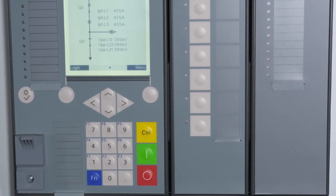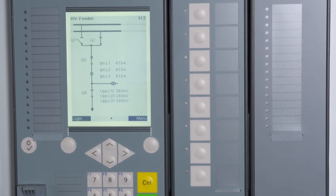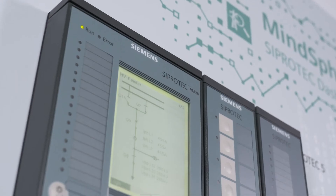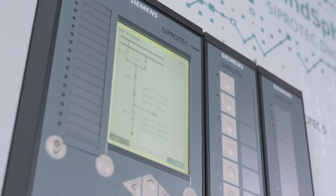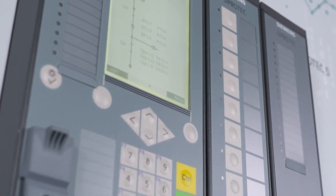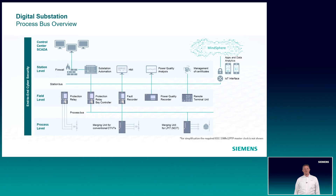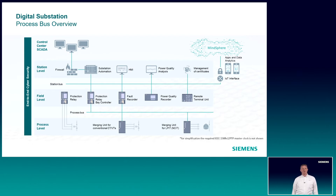What is ProcessBuzz? It's the digital interface between the process level and the field level. Traditionally, instrument transformers are connected from the process directly to the IEDs at field level, like protection devices. With ProcessBuzz, the idea is to digitize the analog and binary signals as close as possible to the process level, to reduce, for example, copper wiring. Because of the low signal levels of LPIT, its use essentially requires digitalization at process level via a merging unit.